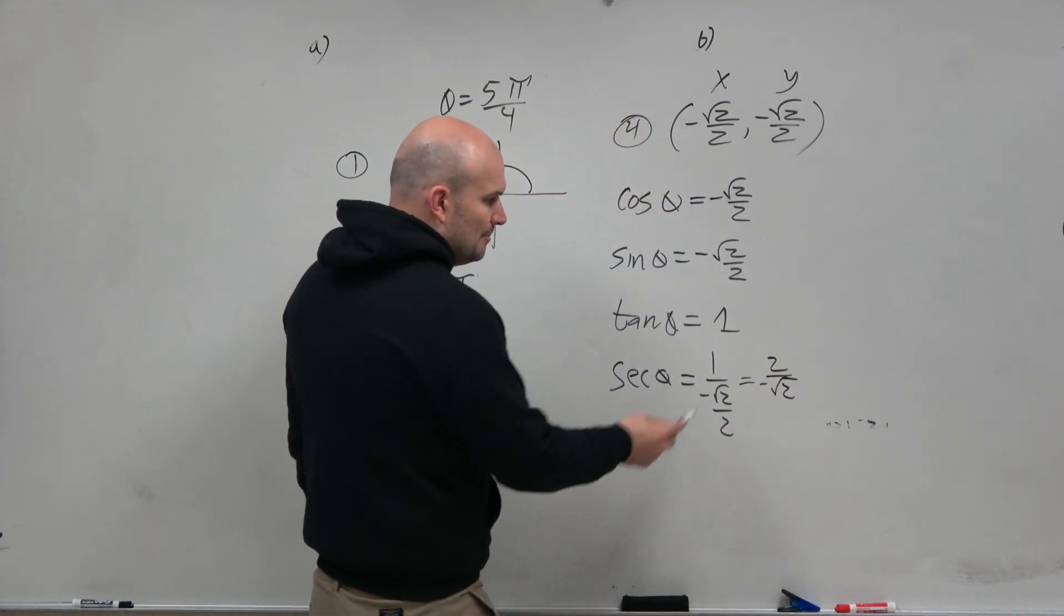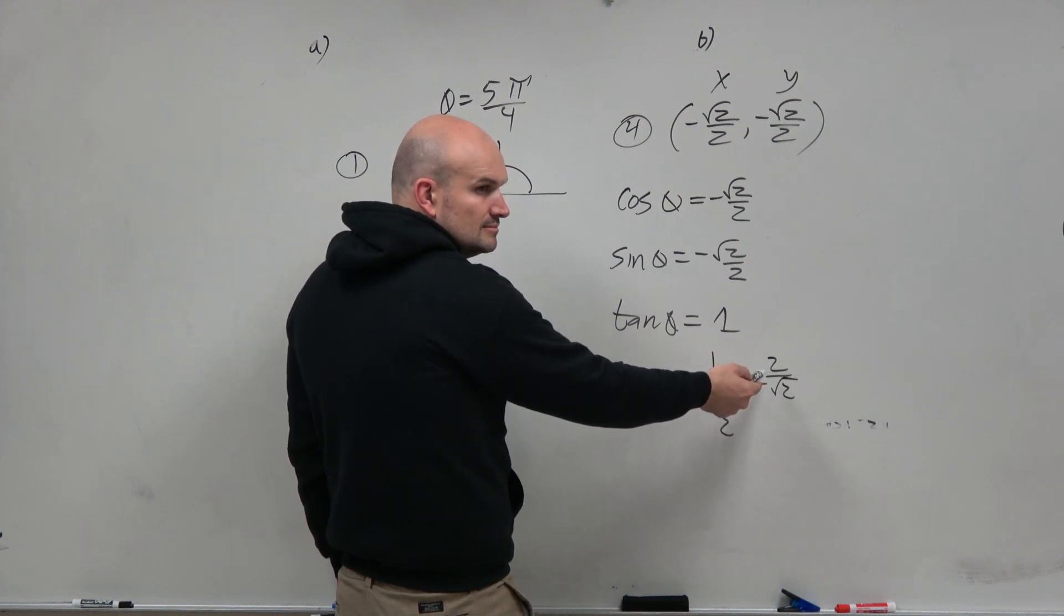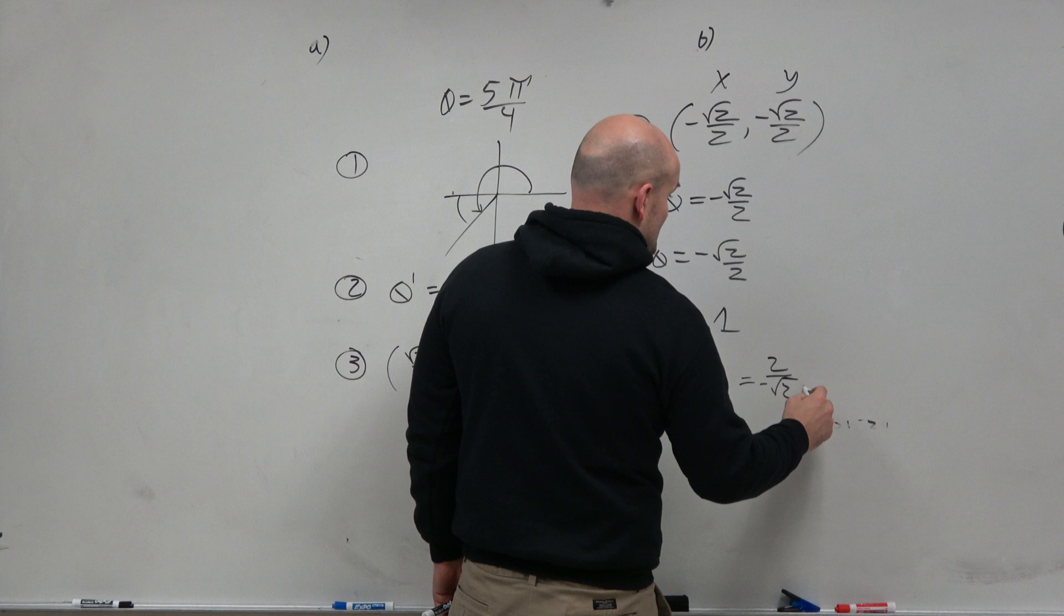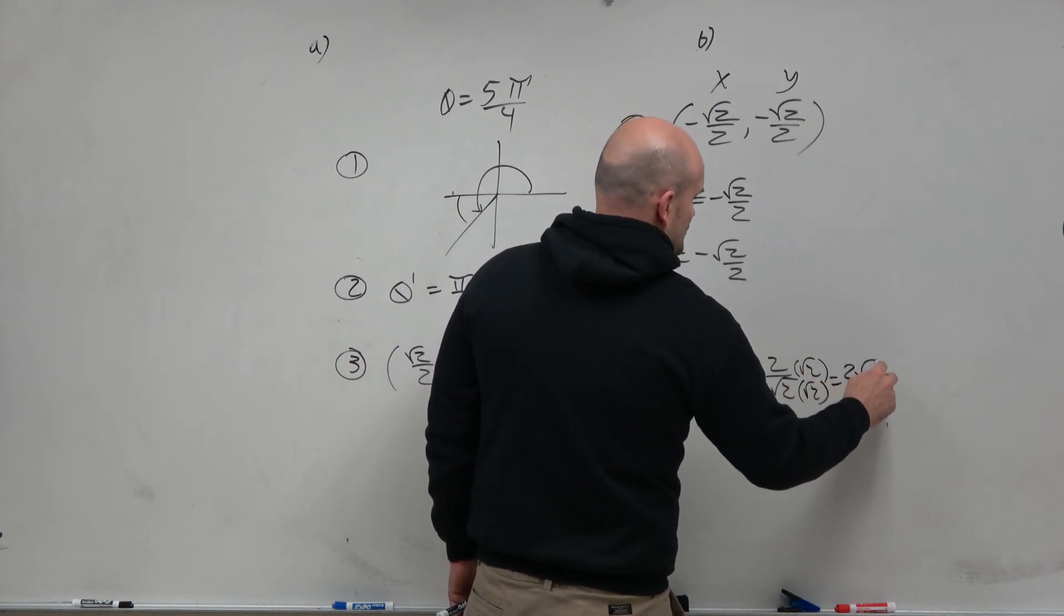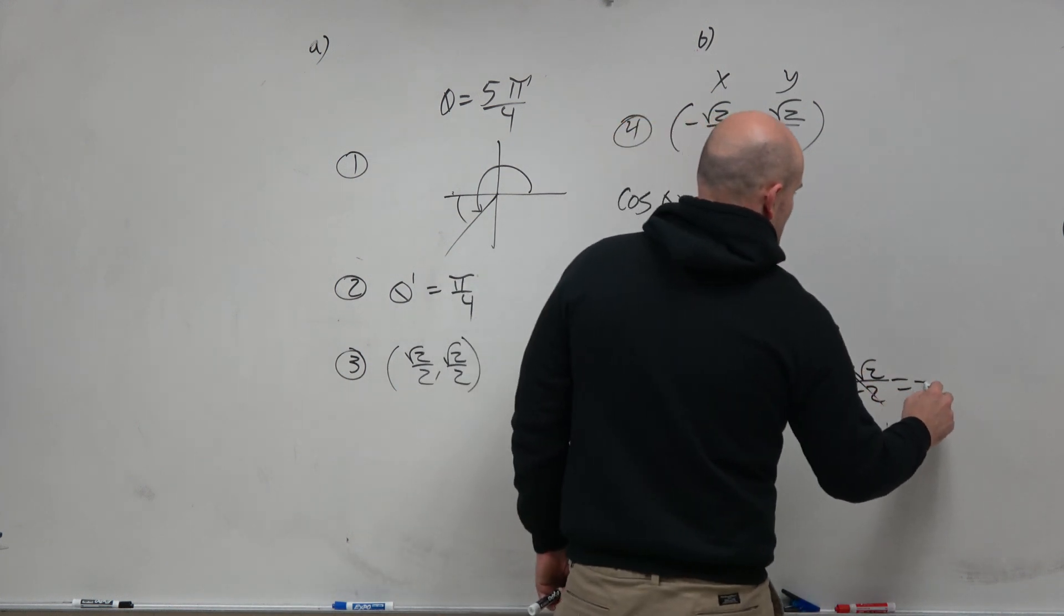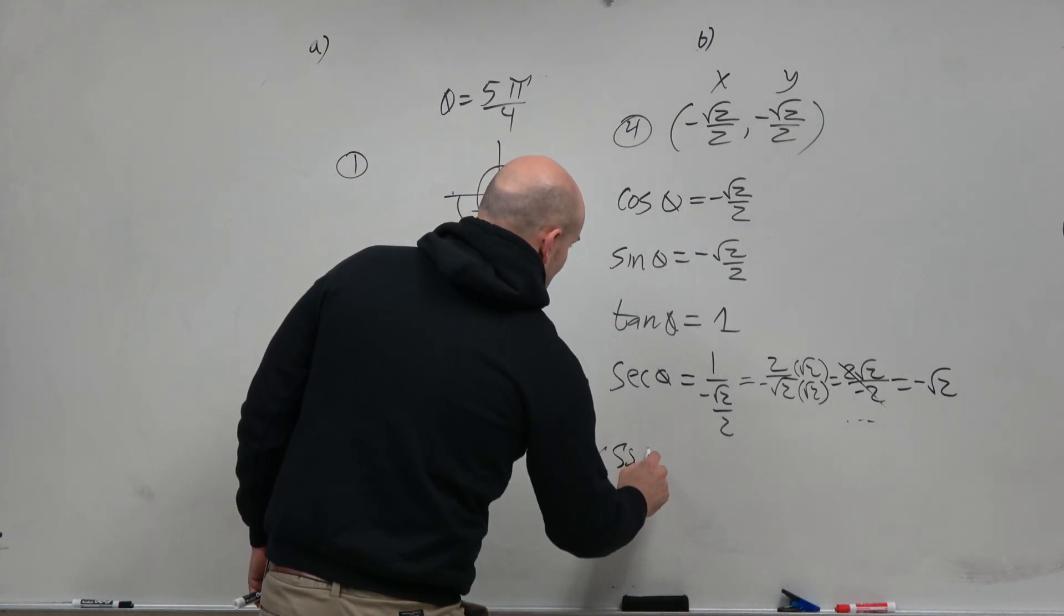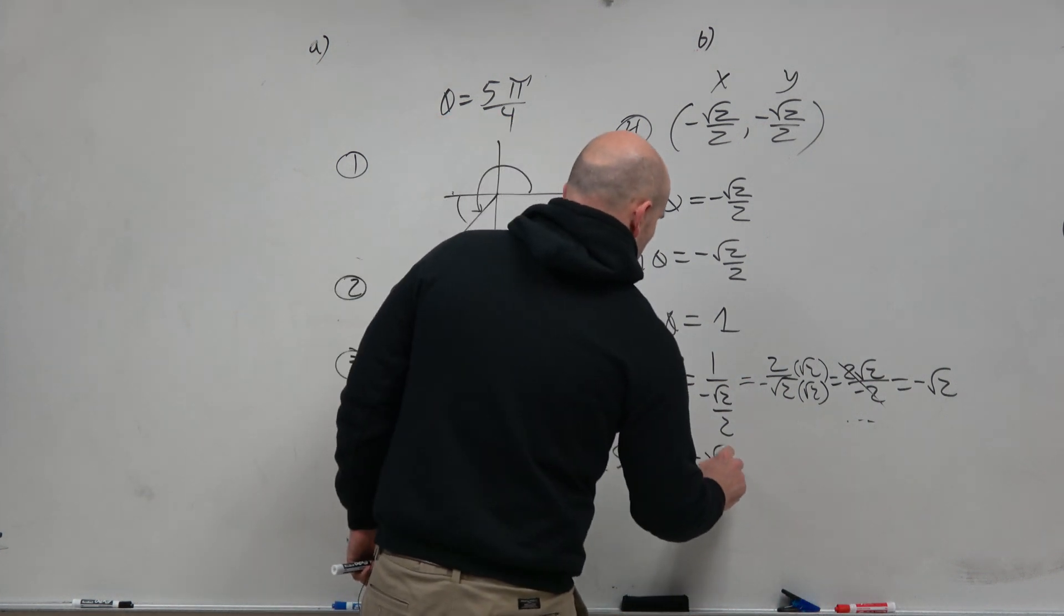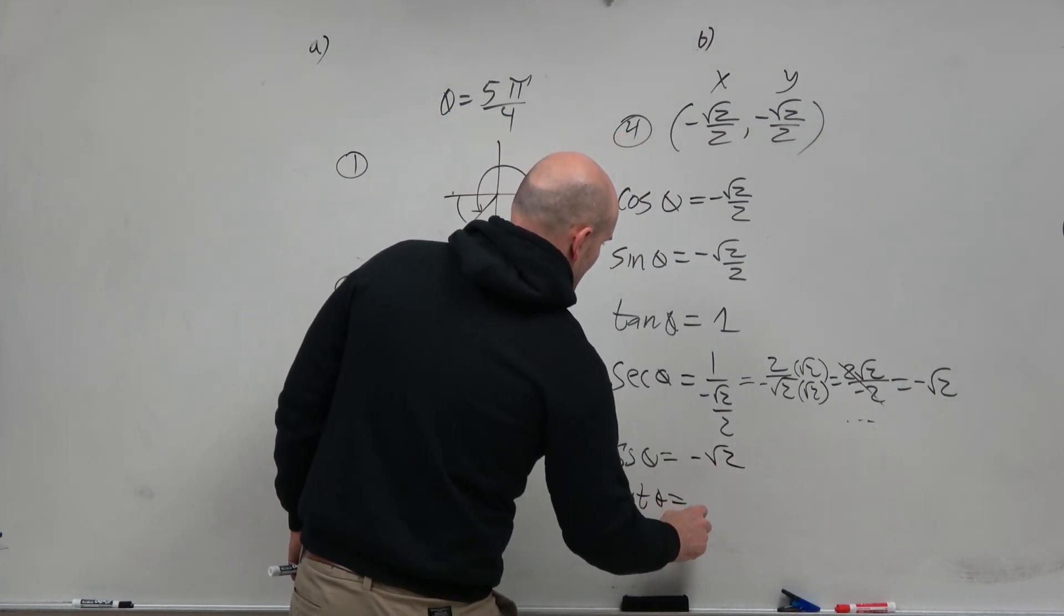You're going to get the same answer. But rather than writing it like this, I would just write the flipped version, because they're reciprocals of each other. And then I'd rationalize the denominator. I'll show my work here, I guess. 2√2/2. So the final answer is -√2. And then the cosecant of θ is going to be -√2. And then the cotangent of θ equals positive 1.